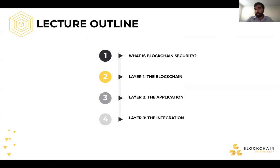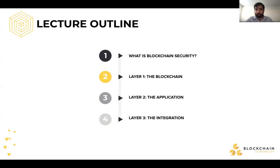Then we're going to go into what I like to think of as the three different layers to blockchains and blockchain security. The first one being the blockchain itself — the base protocol that we rely on. The second being the application, something built on top of the blockchain protocol. And the third being the integration — the way in which we build off-chain services that integrate with blockchains and the applications built on top of them.